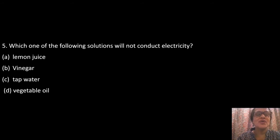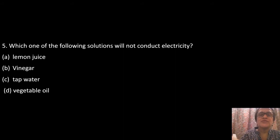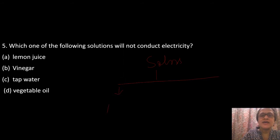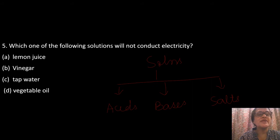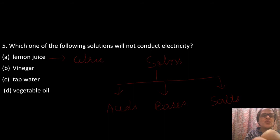Question 5: Which solution will not conduct electricity? The four options are lemon juice, vinegar, tap water, and vegetable oil. In solutions, conduction occurs via free ions. Solutions of acids, bases, and salts can conduct electricity. Lemon juice contains citric acid, so it will conduct. Vinegar contains acetic acid, so it will also conduct electricity.